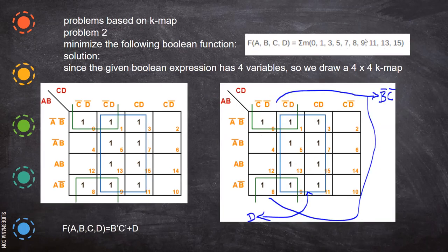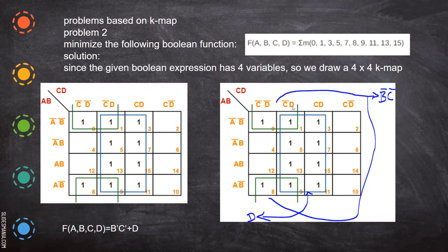Then we will see another problem where we are given a summation — sum of products — form: 0, 1, 3, 5, 7, 8, 9, 11, 13, 15. We write ones at those positions in the K-map. You can form a quad which eliminates three variables, and by rolling the map you can form another quad. When you write this reduced quad, you get D only, because C-bar C is gone and A and B are both gone.